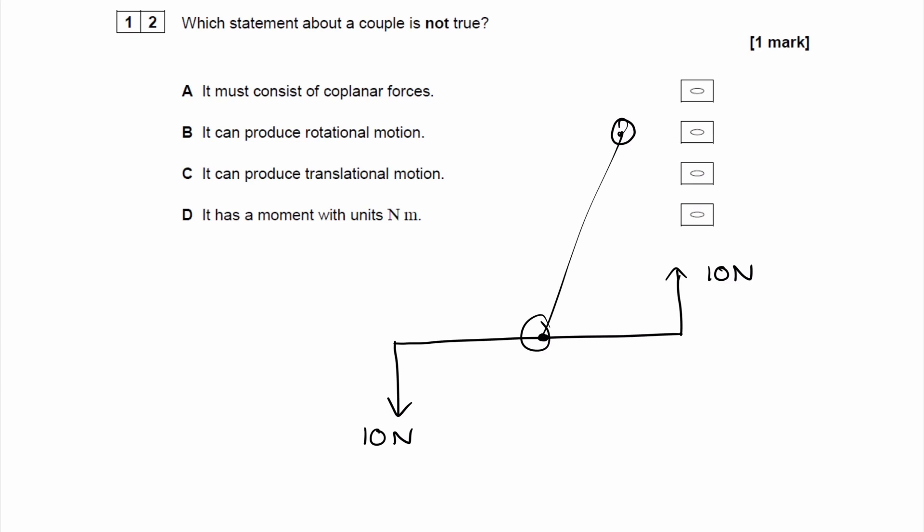So just to reiterate, the two types of motion that we're considering here are translational and rotational. Rotational would be when the object rotates around a fixed point, and these two forces will cause the object to rotate around this point in the middle. Translational motion is when the center of mass moves from one point to another. So we're trying to think about, can these two forces cause that?